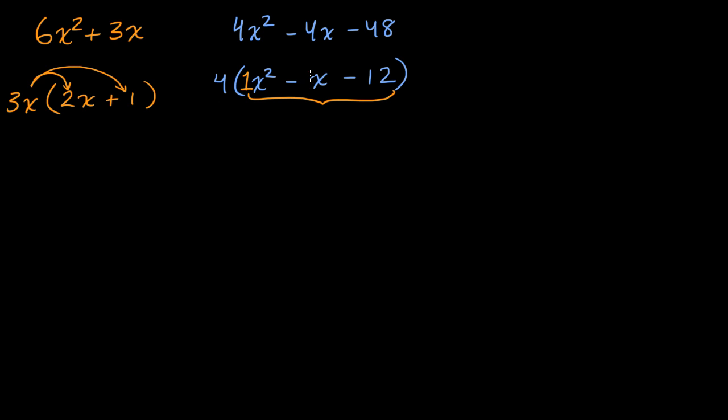...whose sum equals the coefficient on the first degree term, on the x term? So are there two numbers that add up to negative one? You didn't see a one here before, but it's implicit there. Negative x is the same thing as negative one x. So are there two numbers, a plus b, that is equal to negative one, and whose product is equal to negative 12? This is a technique that we do in other videos, and here the key is to realize that maybe we can use it here. So a times b is equal to negative 12.